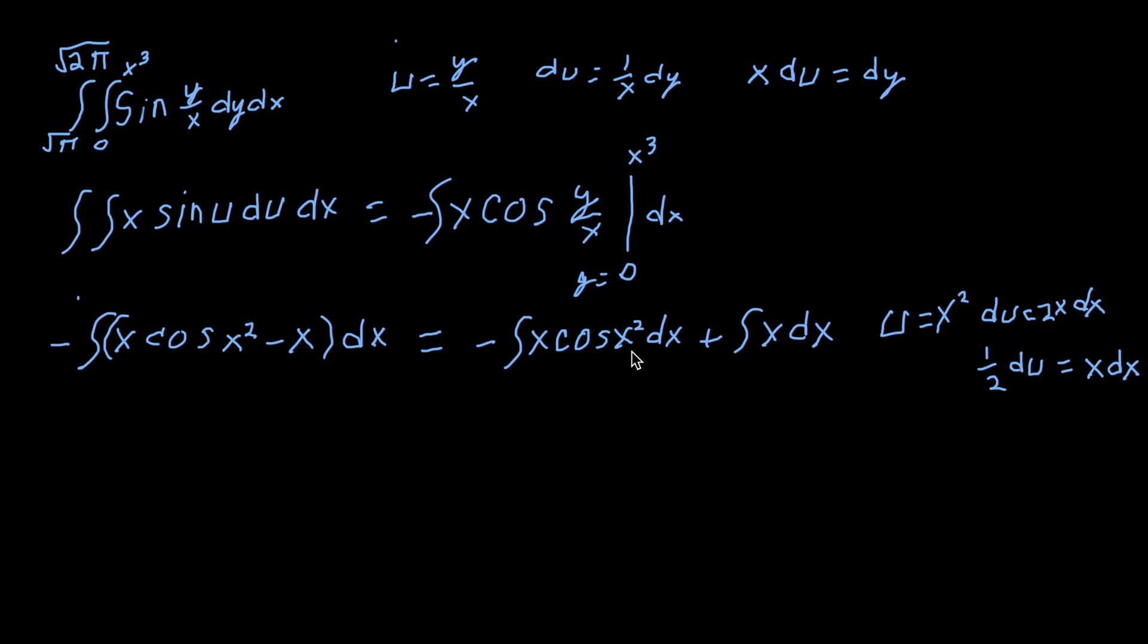Okay, plug in our u and du into here. We'll give us the integral of x as part of the x dx that will go into u. So we'll just do the cosine of u, and the x dx becomes du. And we've got the 1/2 here as part of the du. And then we'll write the second term, which remains the same, x dx.